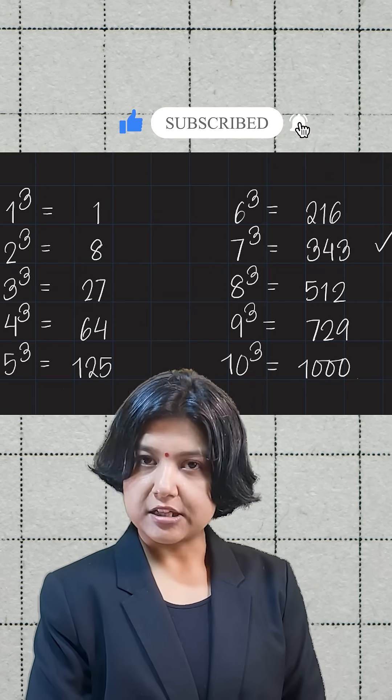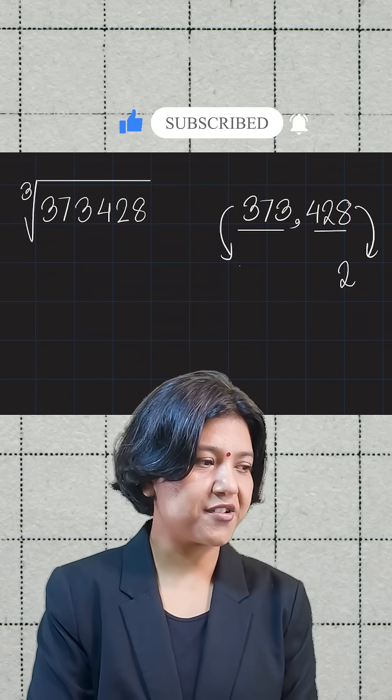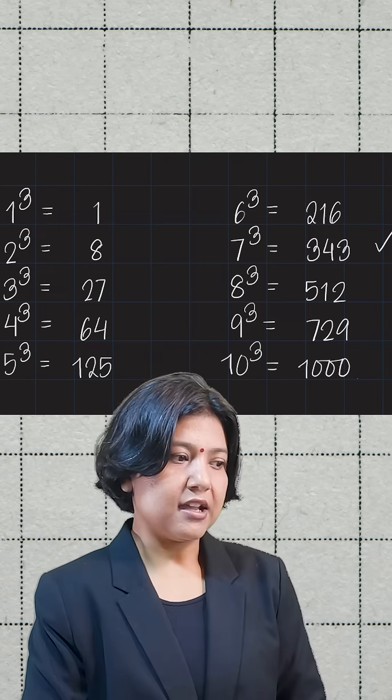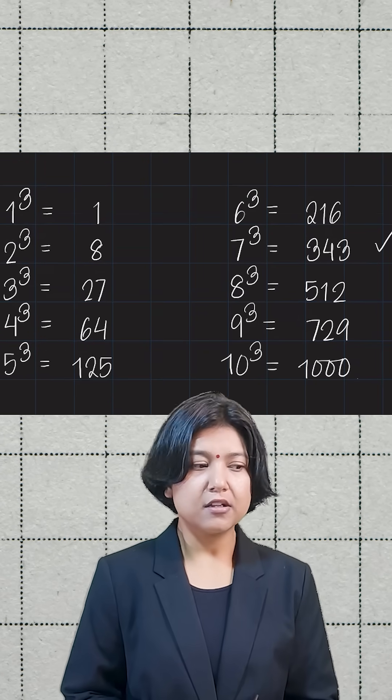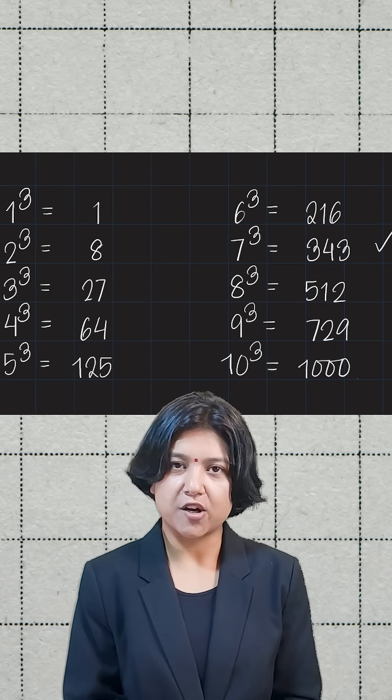And what number have we been given is 373 exactly. So 373 has to be closest, or it is closest to 7, cube of 7. Though it lies between the cube of 7 and 8, we always prefer the smaller value.